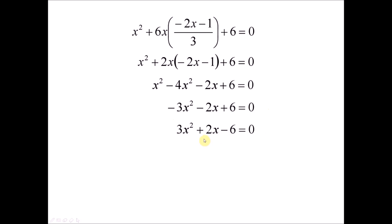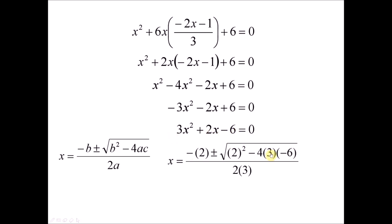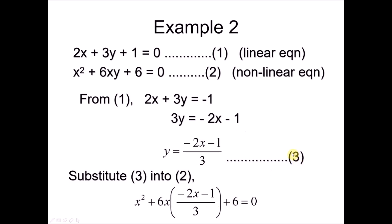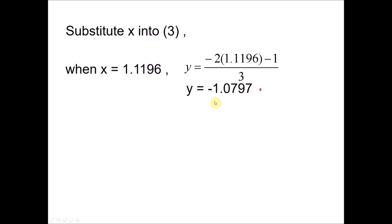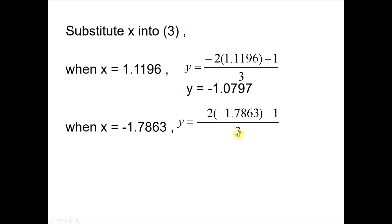Whenever we cannot factorize, it is always advisable to use the quadratic formula — this is the safest way to get an answer. Substitute the values of a, b, and c into the formula to get the two values of x. Give your answer to four decimal places. Then substitute each x value into equation 3 to find the corresponding y values. When x is one value you get the corresponding y, and when x is negative 1.7863 you get the corresponding y. Rewrite the complete answer.